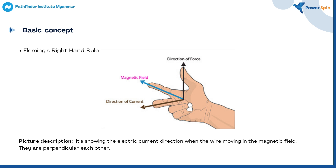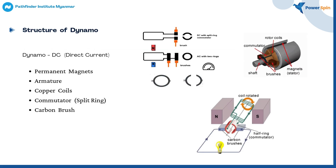We can see that they are perpendicular to each other. Dynamo is a DC current. It includes permanent magnets, an armature, copper coils, commutator, and carbon brushes.